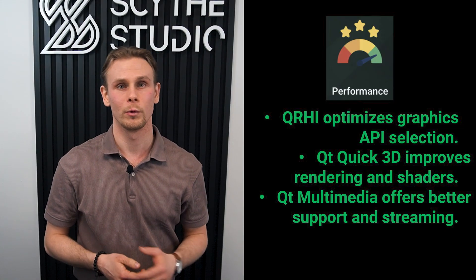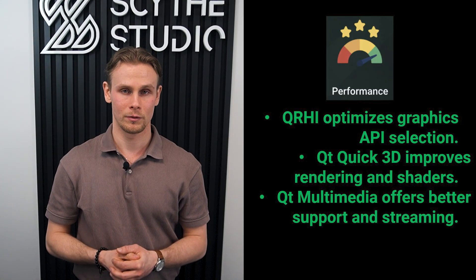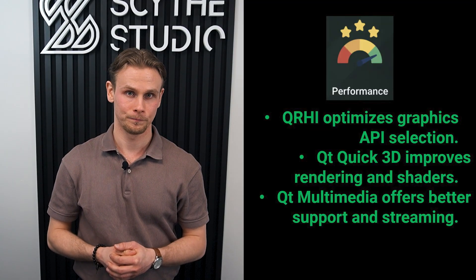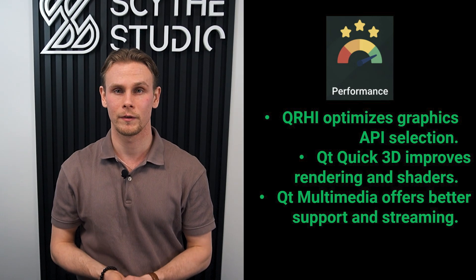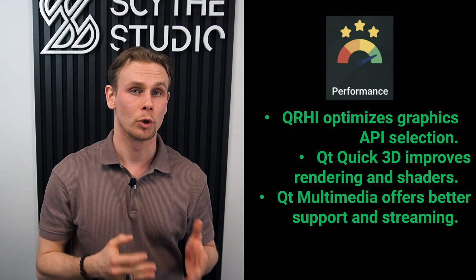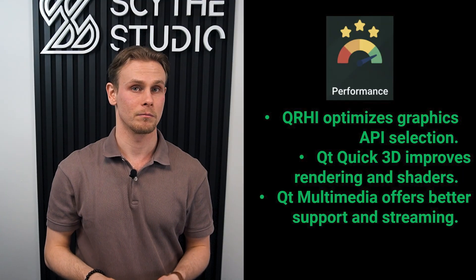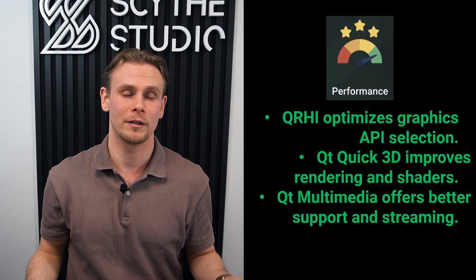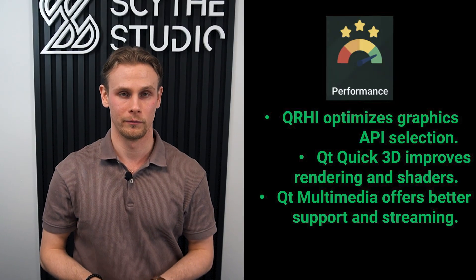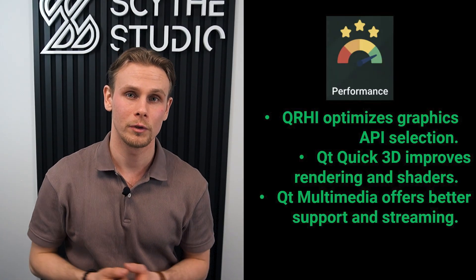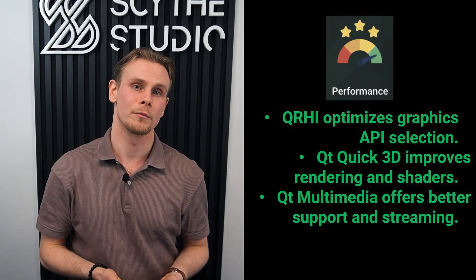Unlike Qt 5, which relied heavily on OpenGL, one of the biggest upgrades in Qt 6 is QRHI — a new abstraction layer that lets Qt 6 choose the best graphics API for each platform. Qt Quick 3D offers a unified 2D/3D rendering system, improved shaders and better material handling, making it far more powerful than before. Let's not forget about Qt Multimedia, which has been completely updated for better cross-platform support, lower latency and improved audio-video streaming performance.